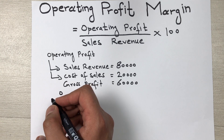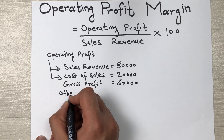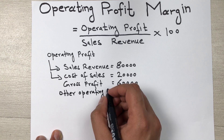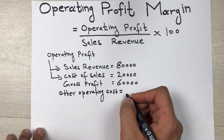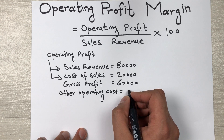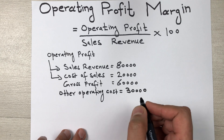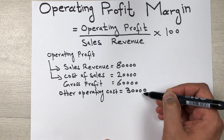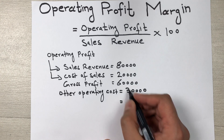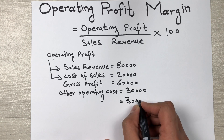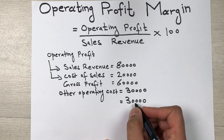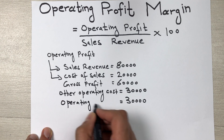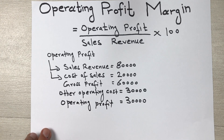For example, you have admin expenses or marketing expenses — other operating costs. Let's say other operating cost is 30,000. What we have to do now is subtract this gross profit with the other operating cost to get our operating profit. So 60,000 minus 30,000 gives us 30,000 — this is our operating profit.